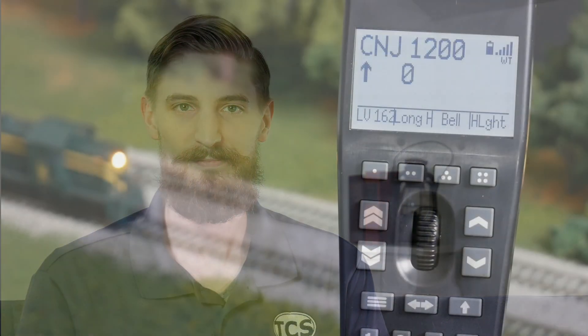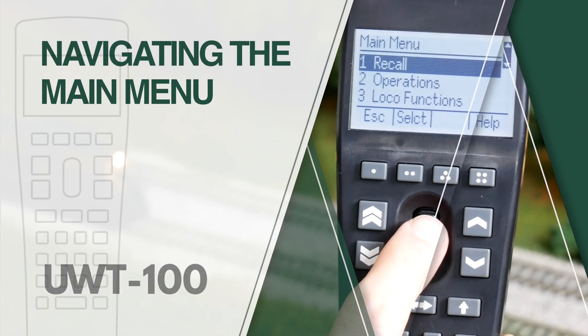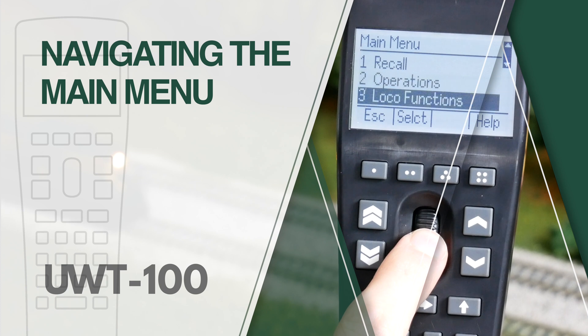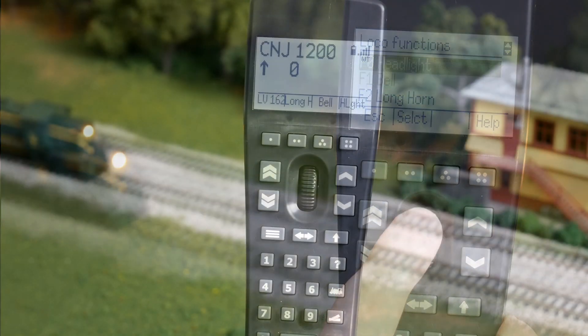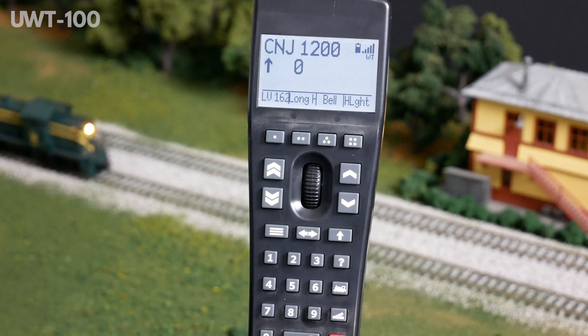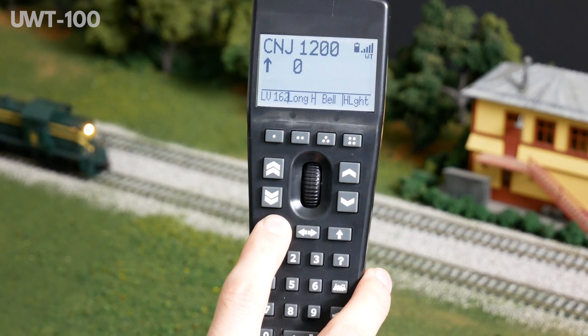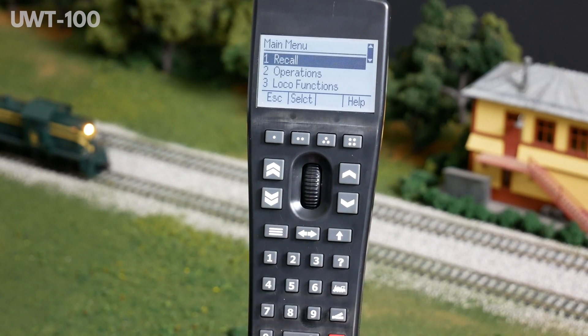Welcome back to our Universal Wi-Fi Throttle video series. In this segment, we'll be discussing main menu navigation. The menu button will open the UWT100 main menu. There are functions and options in the menu that can customize your user experience and are helpful for throttle operations.